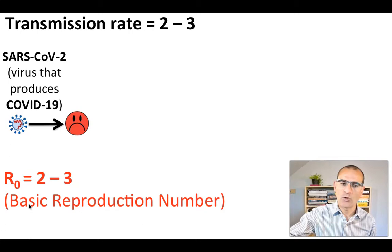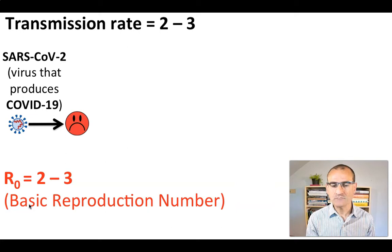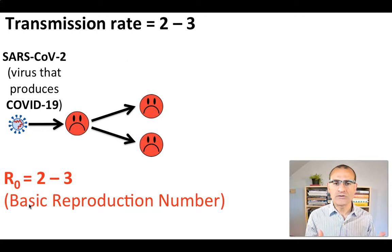Let's talk about the transmission rate of this disease. When a person gets infected, this person on average has the ability to infect two to three people. This is what this transmission rate of between two and three refers to.